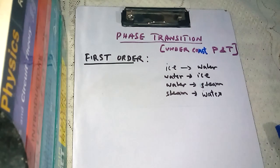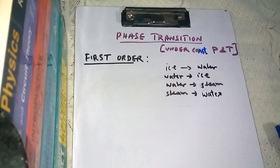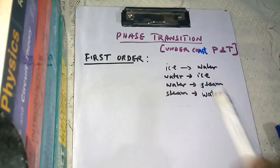Hello friends, this is Abidahan. Welcome to my channel. Today we will discuss the phase transition concept. There are two types of phase transitions: first order phase transition and second order phase transition. Both these types of transitions happen under constant temperature and constant pressure. Now let us see a few examples of first order phase transition.